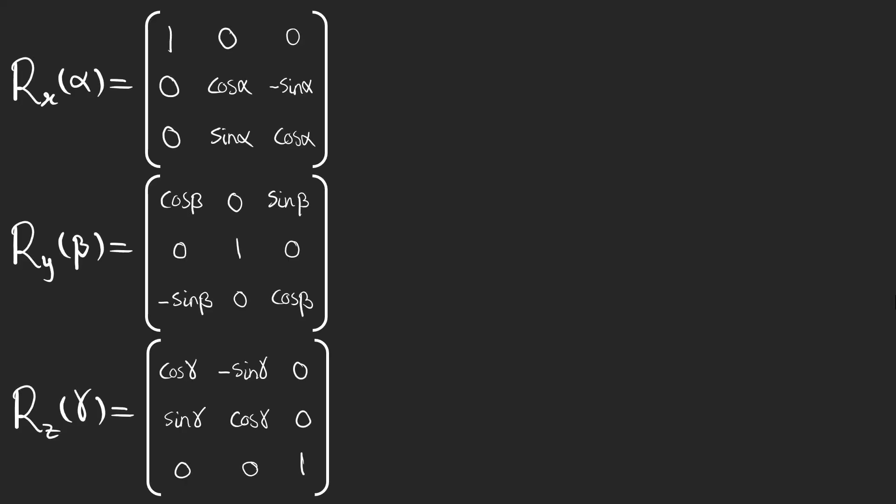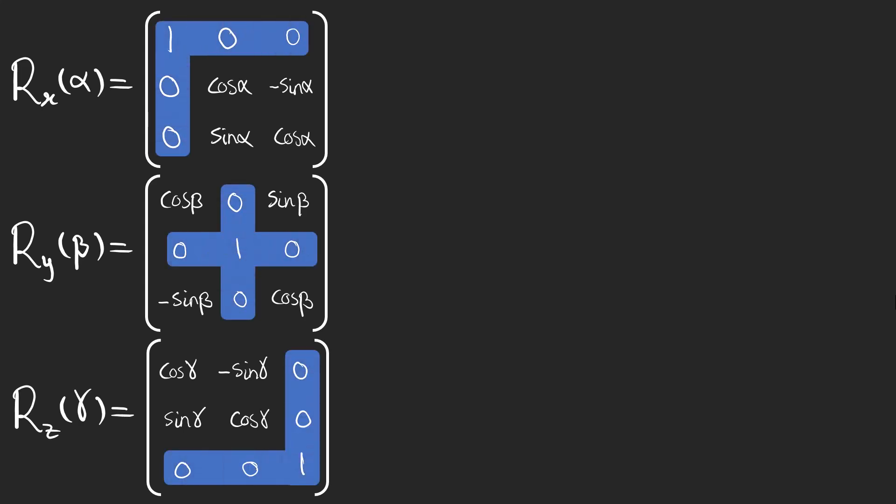These are the three matrices associated with the three rotations about three-coordinate axes. For each of them, the row and column associated with the axis of rotation have zero elements except the one that corresponds to the axis itself.